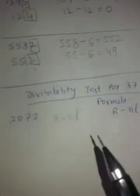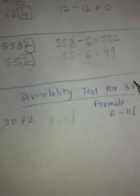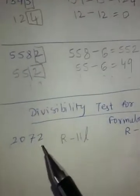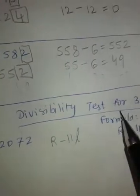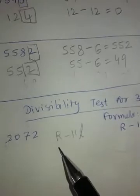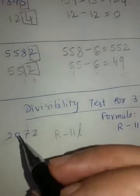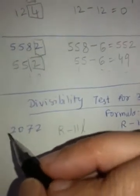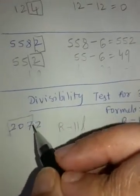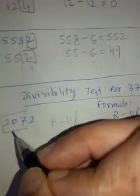But it's not that you will always get a 0 at the end step. Sometimes you may not get a 0, but you will get a multiple of that particular number. Let's see how. For test of 37, formula is R-11L. Number is 2072.